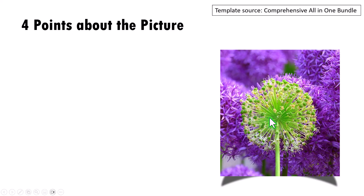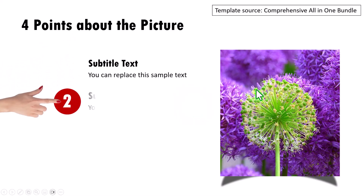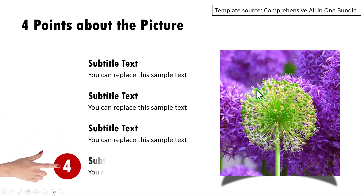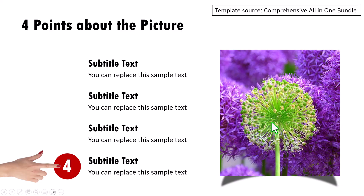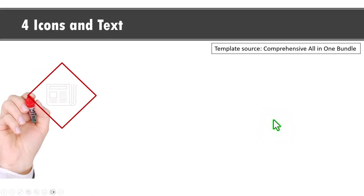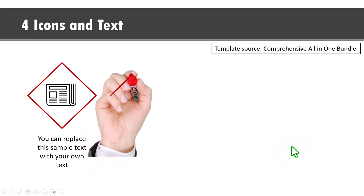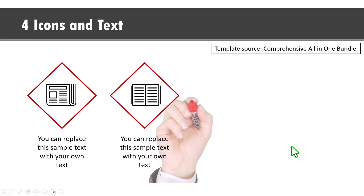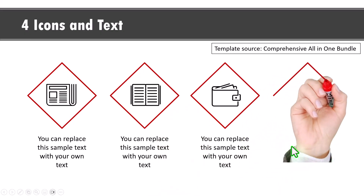Now let me show some simpler animation alternatives to showcase pictures. This template explains one picture, and on each click you talk about the first attribute, then the second, third, and fourth. This is a template from our comprehensive all-in-one bundle — you can replace the picture with any picture of your choice, and complete video tutorials show you exactly how to work with the templates.